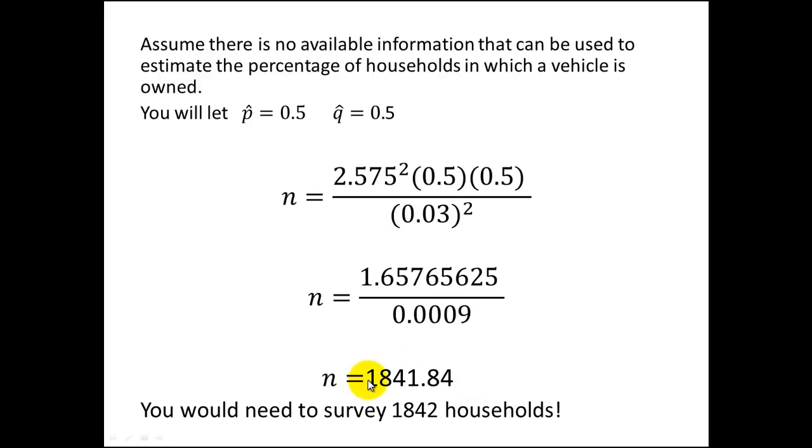So you can see quite a few more, more than double I believe if I did the math right, than you would have to do if you didn't have a prior estimate for p hat and q hat.